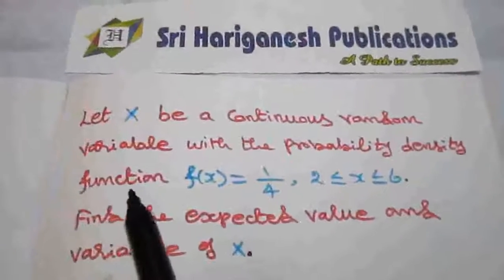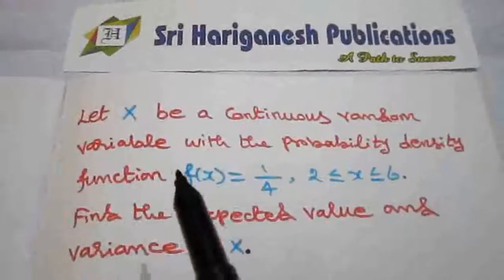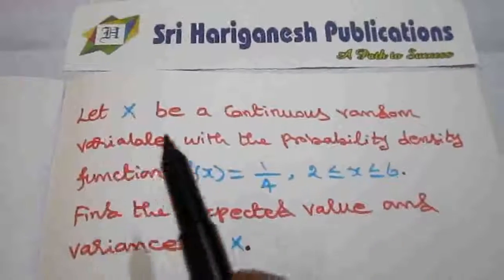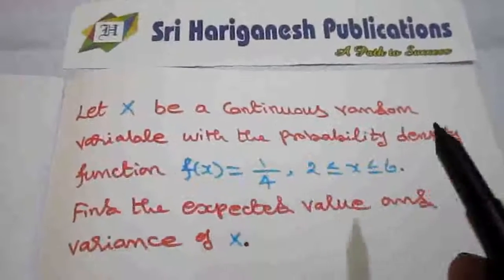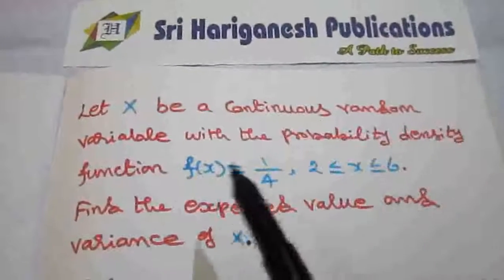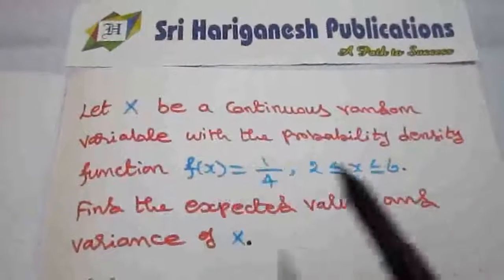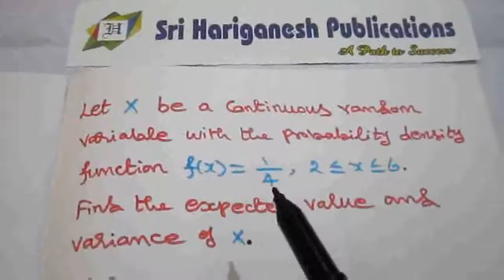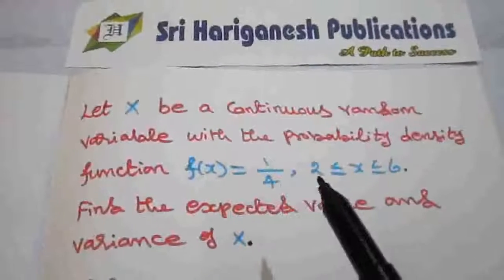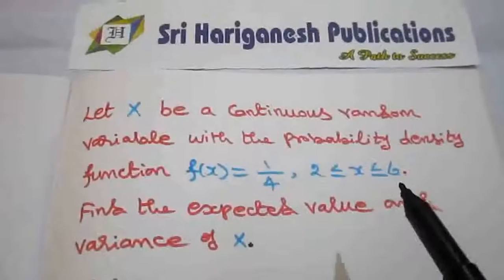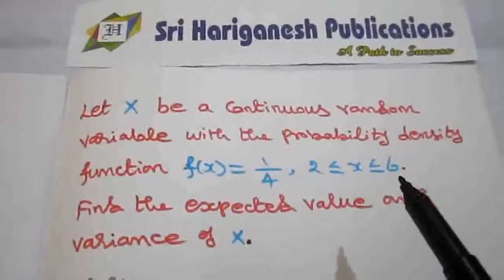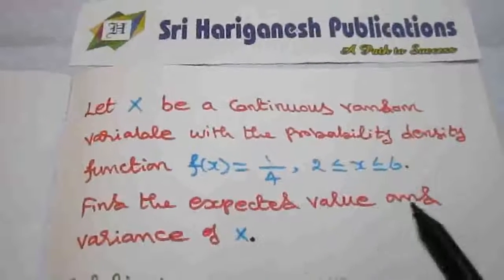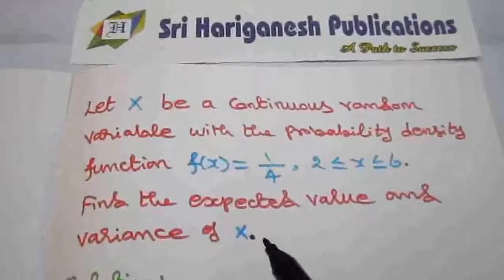One problem based on the continuous random variable. Let x be a continuous random variable with the probability density function f(x) = 1/4 in the interval 2 to 6. Find the expected value and variance of x.